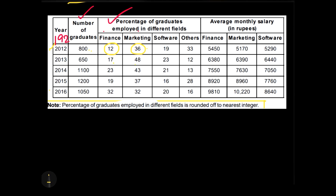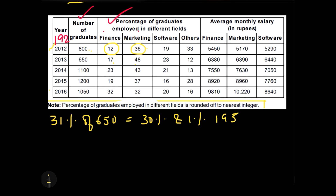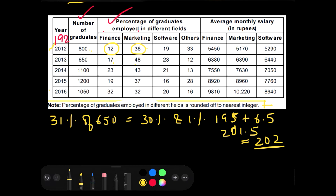For 2013, the difference is 48 minus 17 which equals 31%. That means I need 31% of 650. I can split 31% into 30% and 1%. 30% of 650 is 65 times 3, which gives 195. Then 1% of 650 is 6.5, so 195 plus 6.5 gives 201.5. Since the number of people can't be a decimal, we round it up to 202. So in 2013 the value is 202.